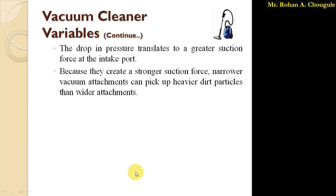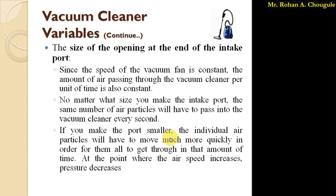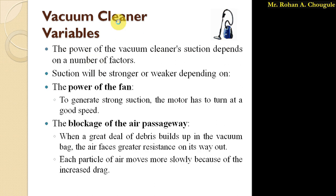If we place a narrower suction attachment, the air speed increases and it provides greater suction force. Due to this greater suction force, heavier dust particles are also collected inside the vacuum cleaner. But with a wider attachment, this is not possible. So these are the factors which affect the suction: first, the power of the fan; second, the blockage of the air passage; and third, the size of the opening at the end of the intake port.